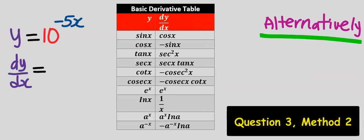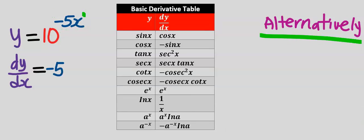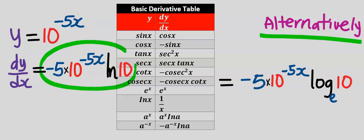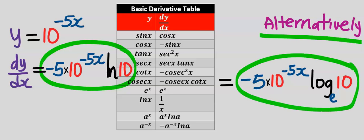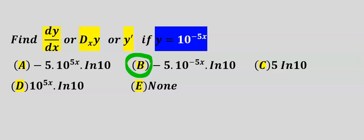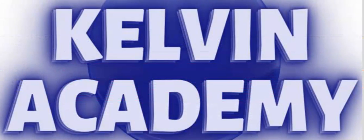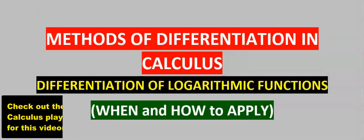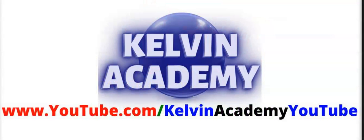Alternatively, using the shortcut: differentiate minus 5x to get minus 5. Recopy back the given question, then multiply by the natural log of that constant. This is our dy/dx, which is the same result. From the options, our answer is B. In the next video, we're going to consider the differentiation of logarithmic functions.